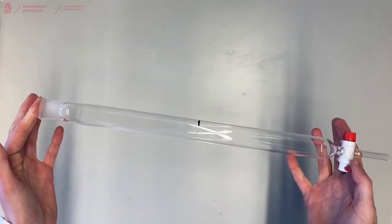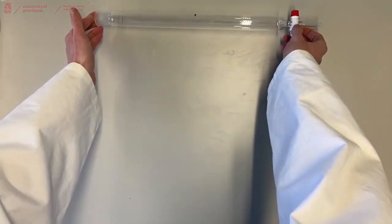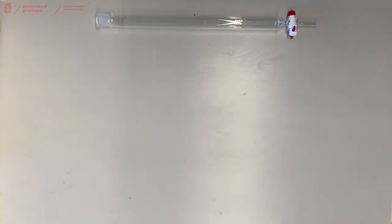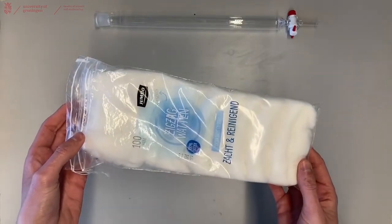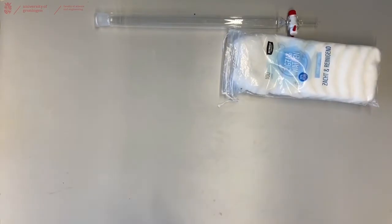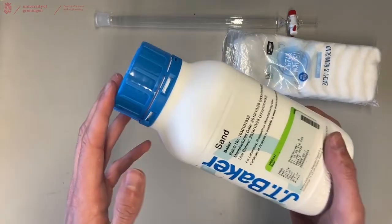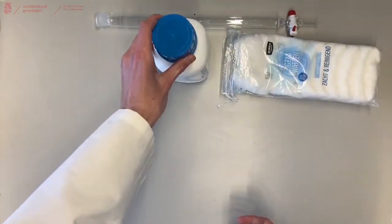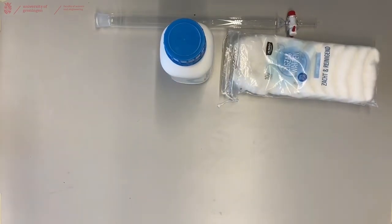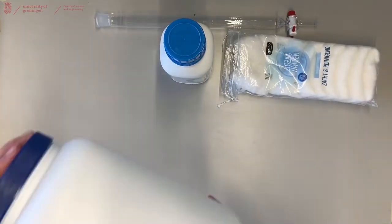First of all, you will need a column. In this column, you will have to fill with a couple of ingredients: some cotton, sand, and in this case we will use silica gel, but you can also do alox columns.